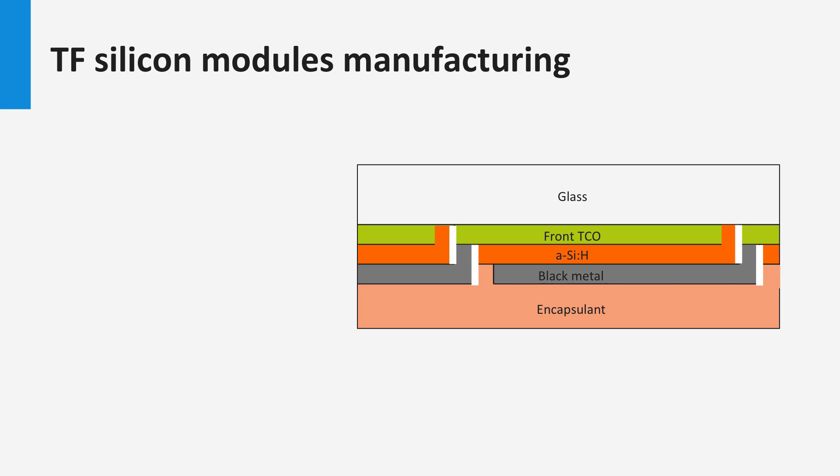The configuration of solar modules of thin film PV technologies are different from those based on crystalline silicon based wafers. Here we will show the concept of how the solar cells in a thin film PV technology are processed and interconnected. We will show it here for a thin film silicon PV technology. In the next blocks we will discuss other thin film technologies like CIGS and cadmium telluride. Similar interconnection schemes are being used for these technologies.